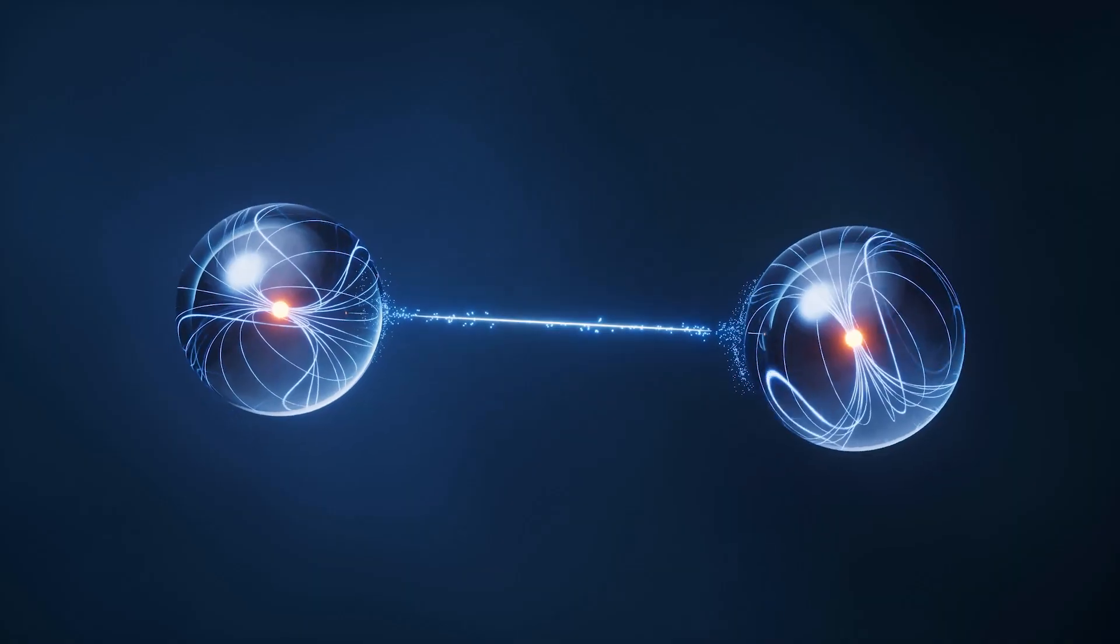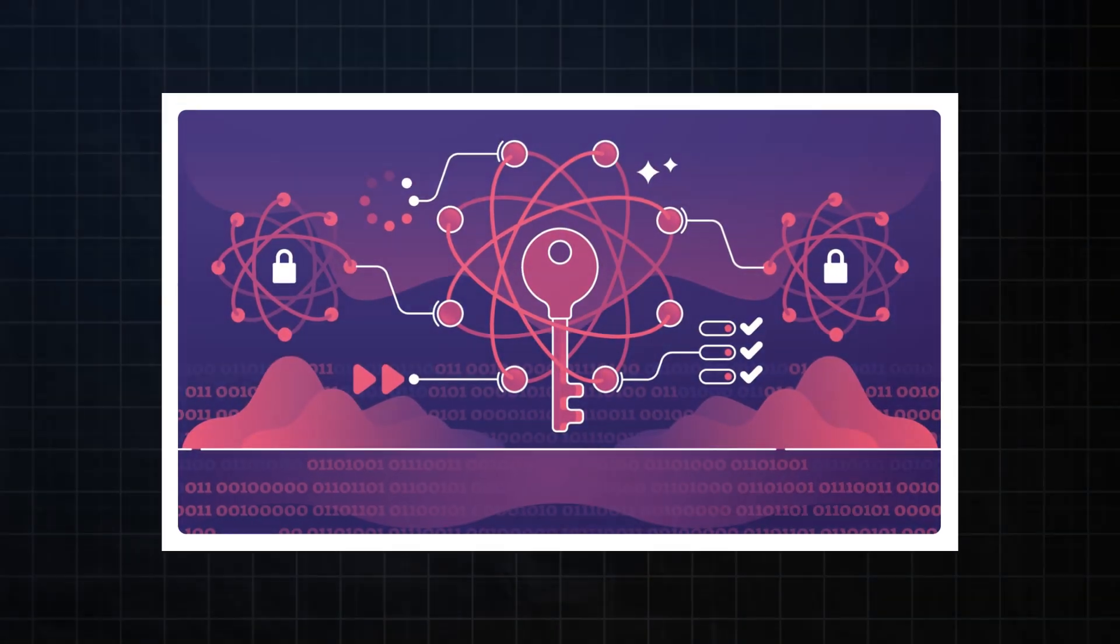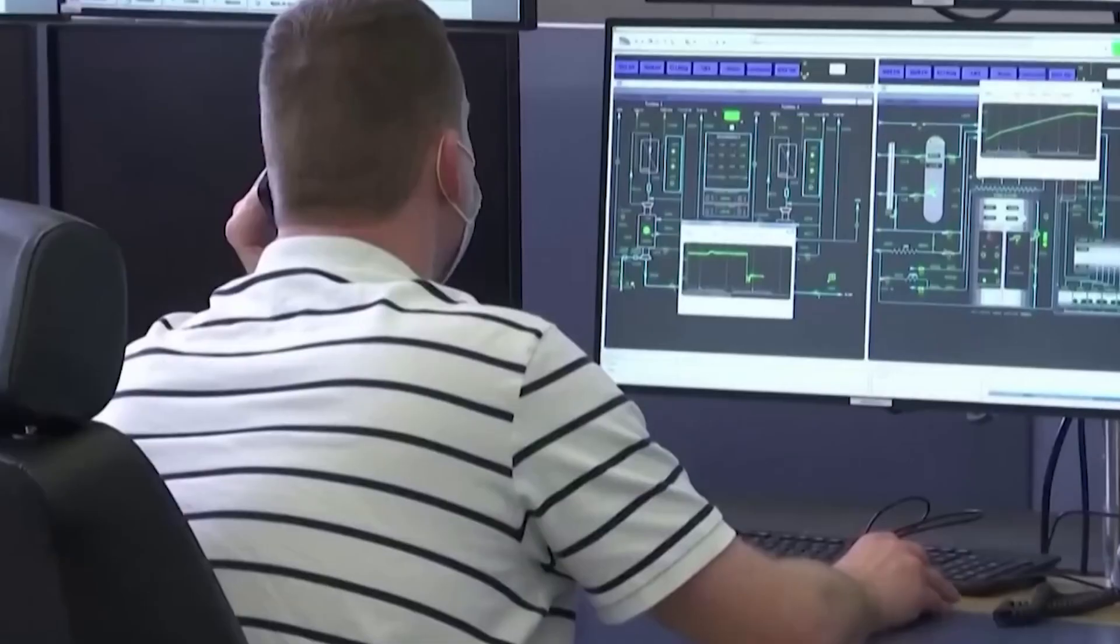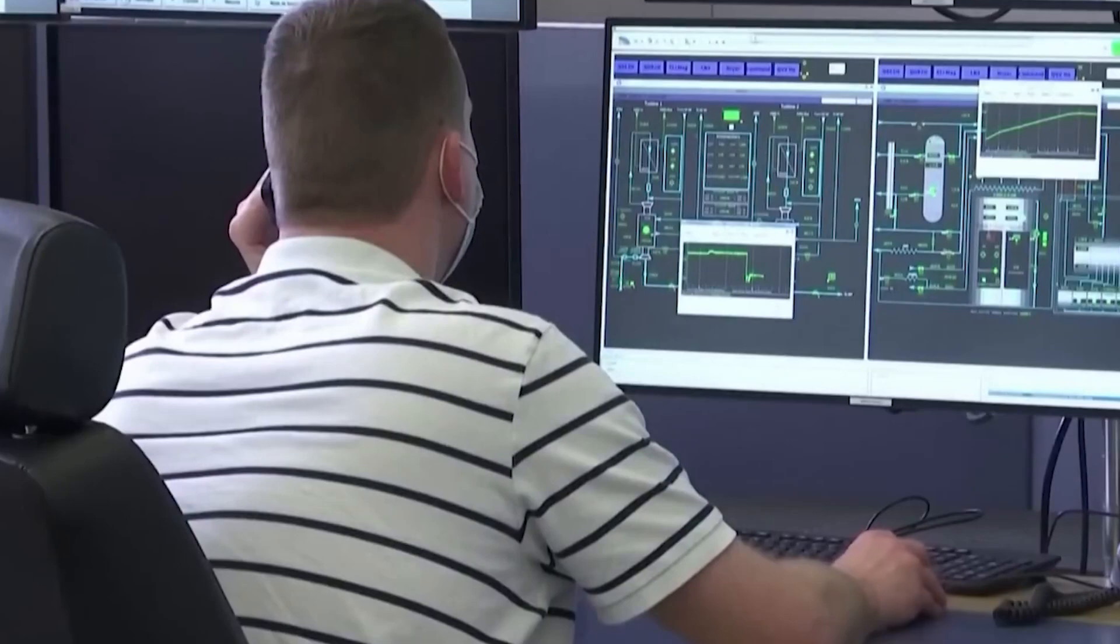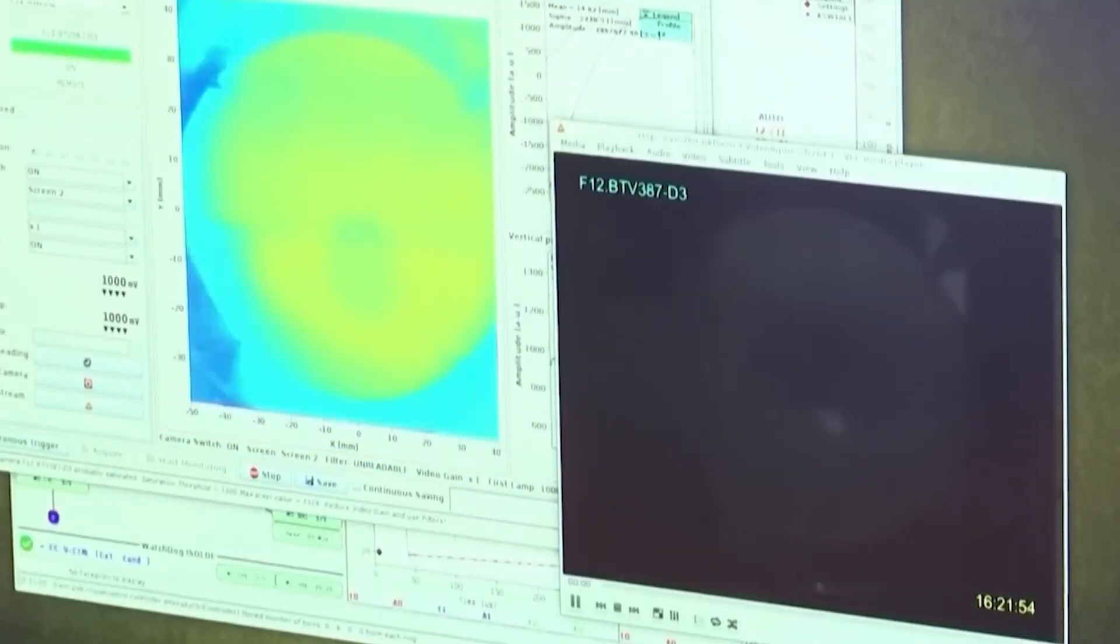Calloway immediately understood the terrifying implications. If quantum information can be cloned, then quantum cryptography, the system designed to protect the world's most sensitive military and financial data, is useless.